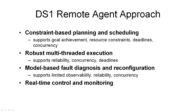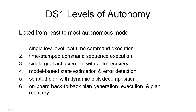The Deep Space One remote agent approach used constraint-based planning and scheduling, robust multi-threaded execution of activities, and integration with model-based fault diagnosis and reconfiguration. Real-time control and monitoring of the spacecraft was the key issue. Deep Space One could operate at various levels of autonomy: it could execute single commands or sequences of activities, seek to achieve given goals, maintain a model of spacecraft state and detect errors from sensor information, deal with a scripted plan and decompose it into greater detail, and deal with onboard back-to-back plan generation, execution, and plan recovery in its most autonomous mode.